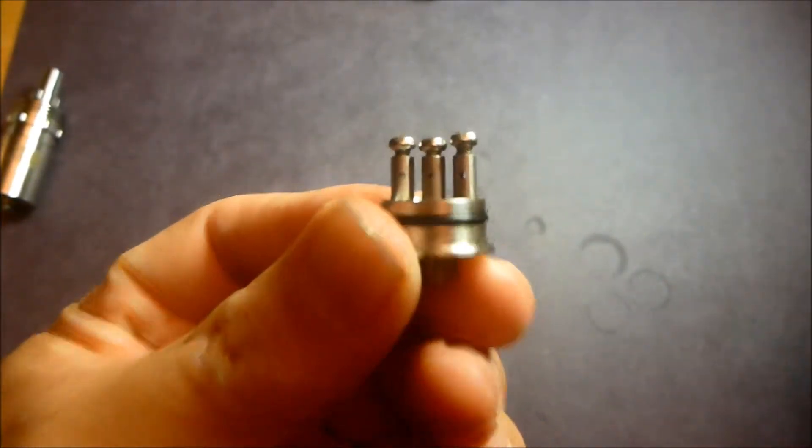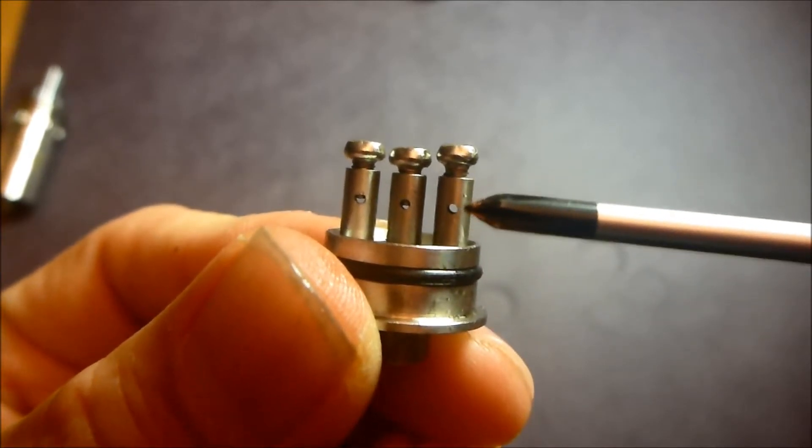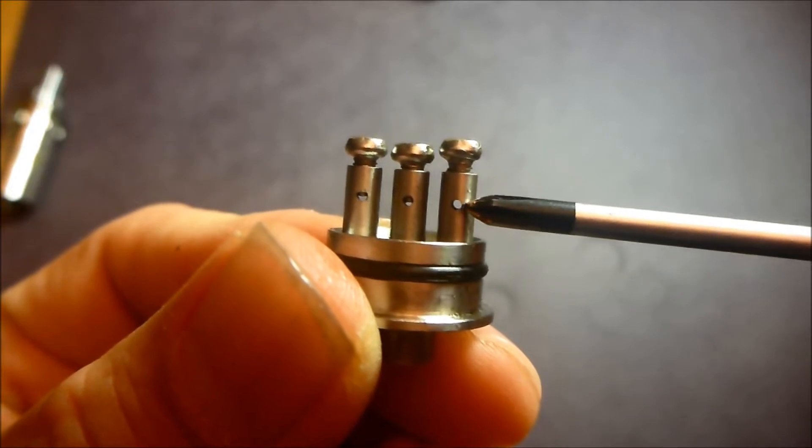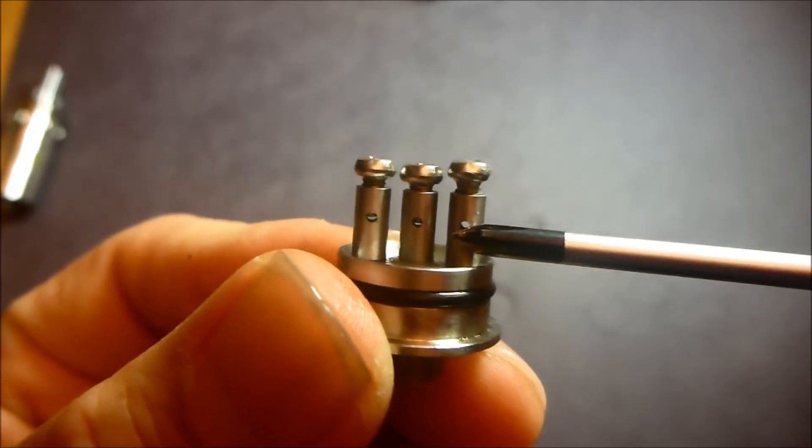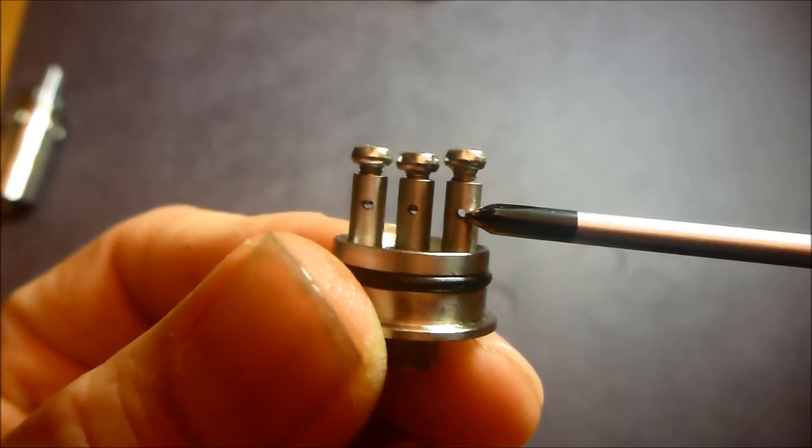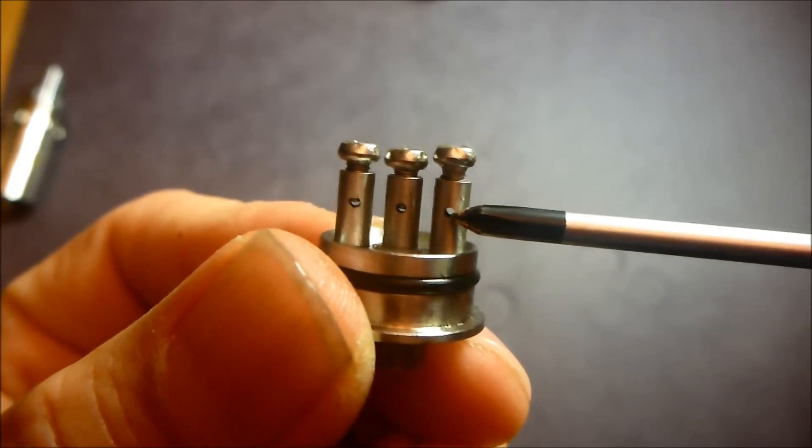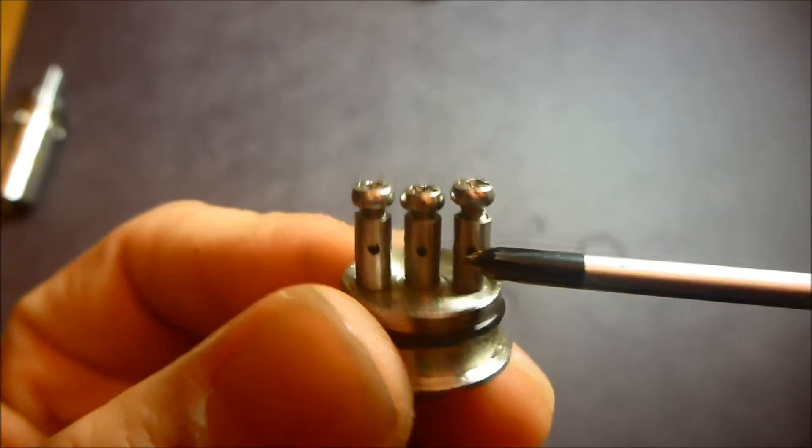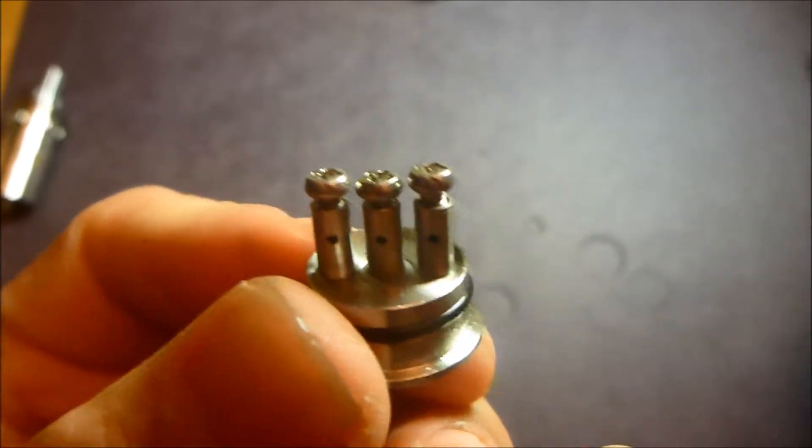Again like I mentioned, the holes are about one millimeter, one and a half millimeter. You may or may not be able to fit. A 28 gauge dual micro coil will fit. 26 maybe, but anything lower than that, I don't think they'd fit in dual coil mode. You'd probably have to do a single coil on that.